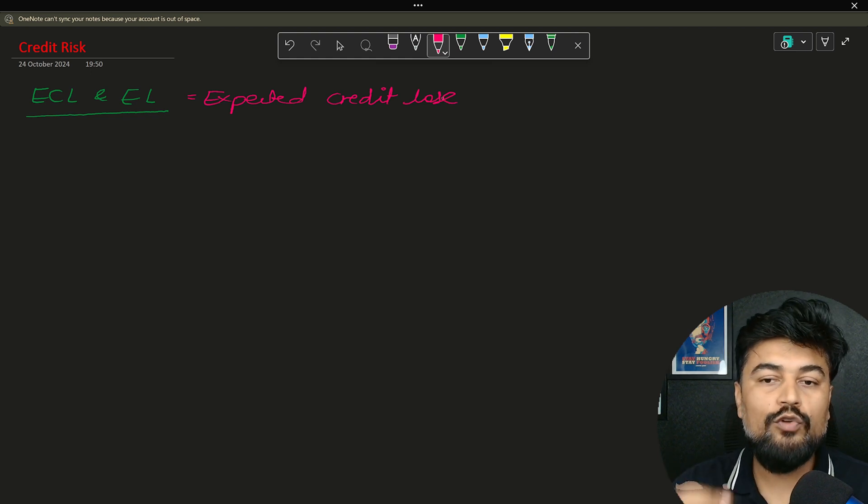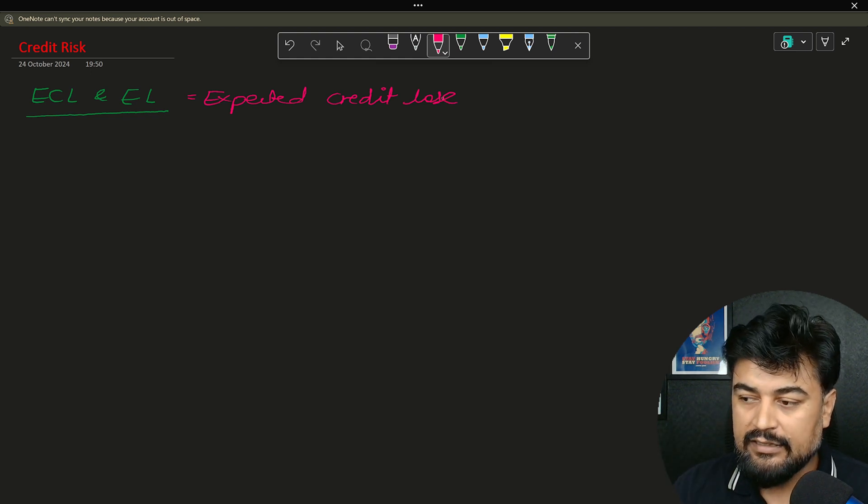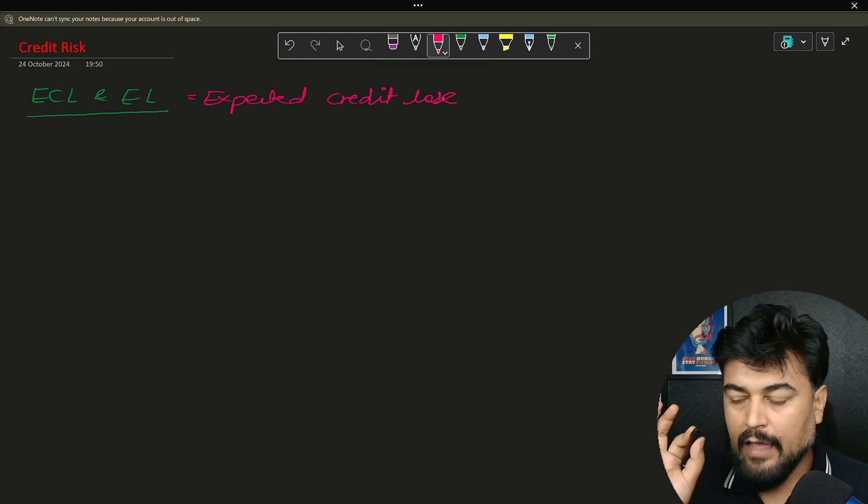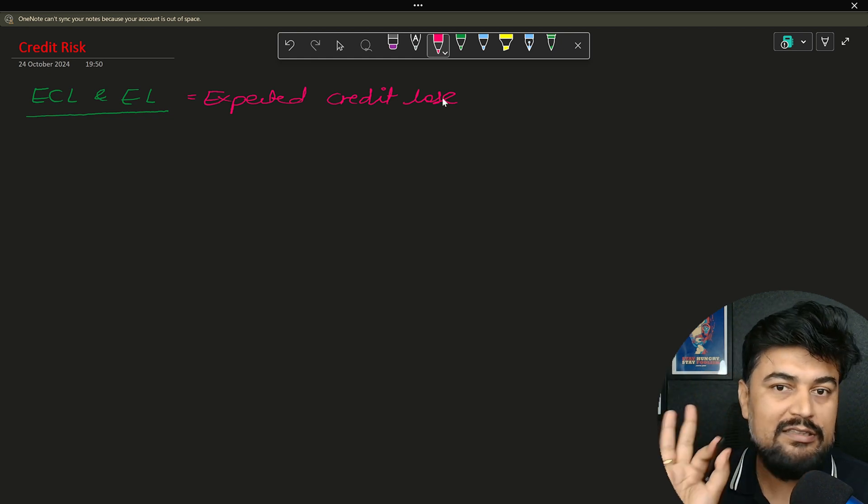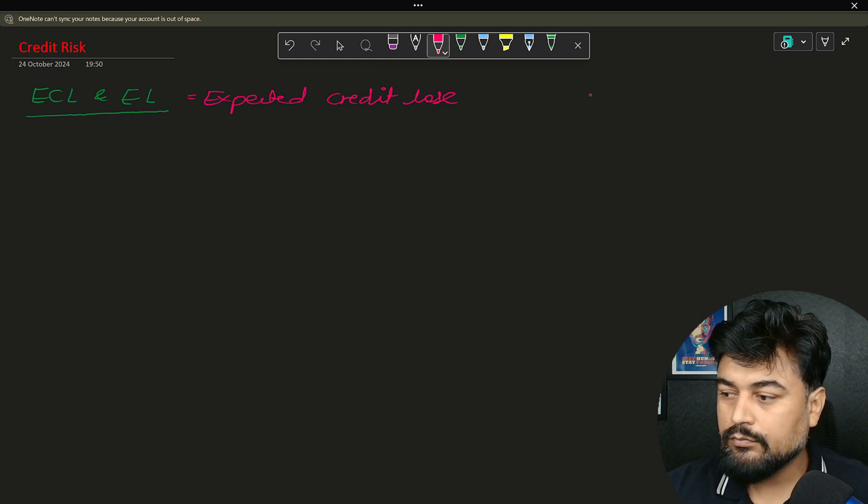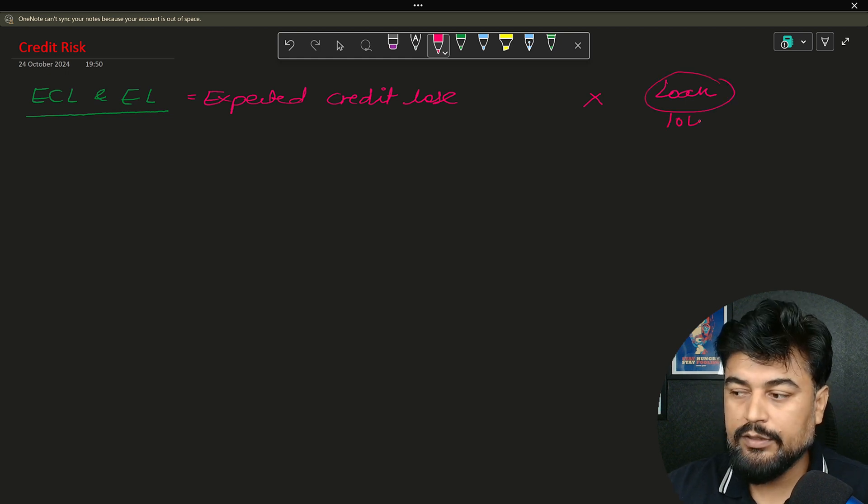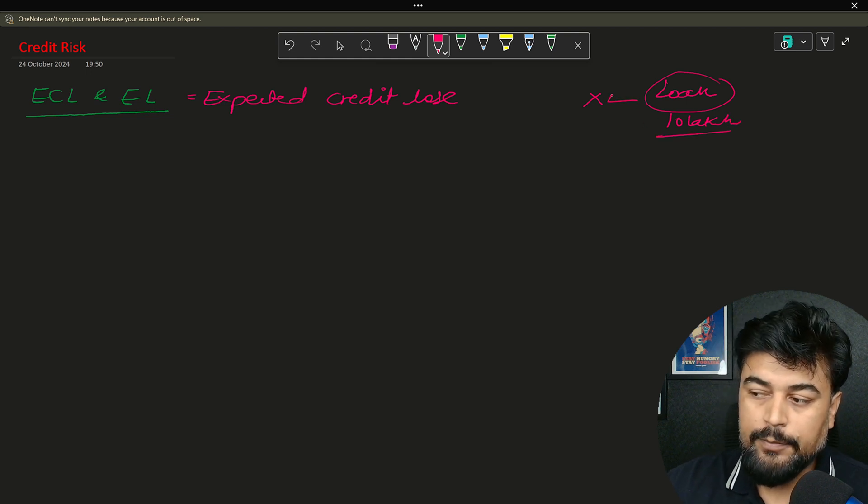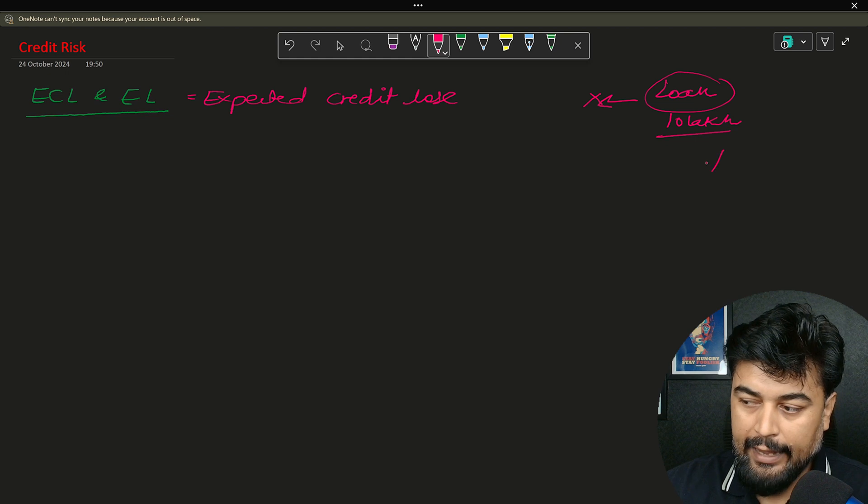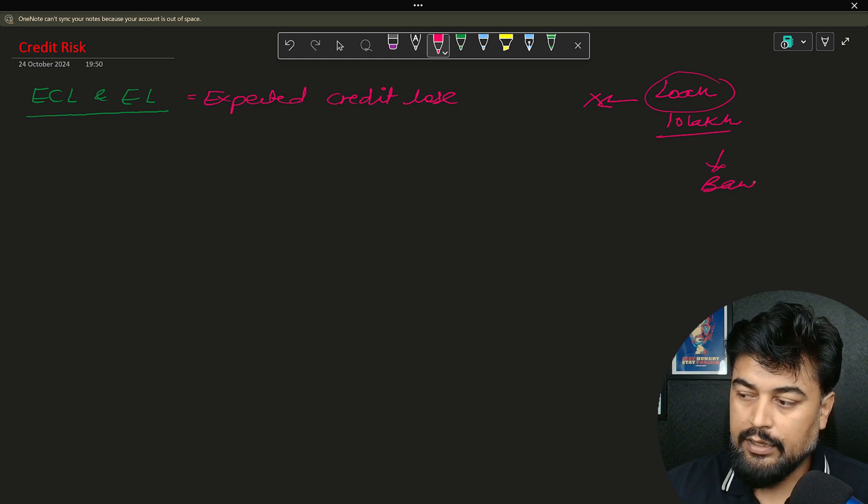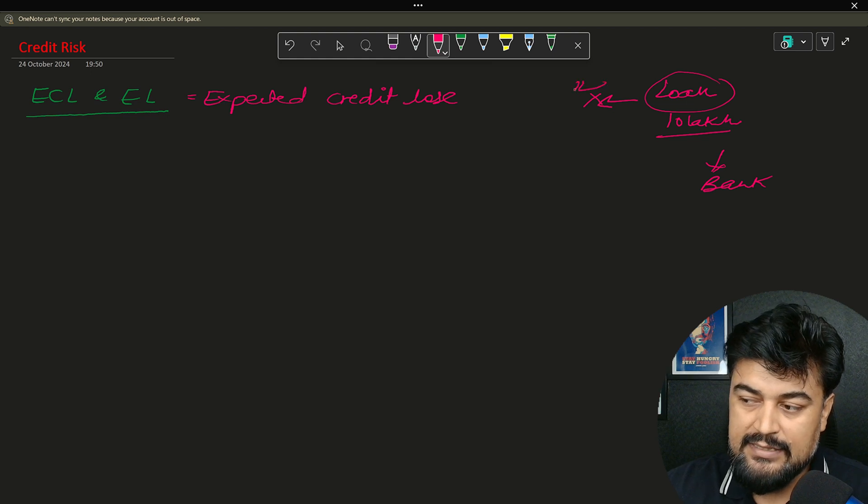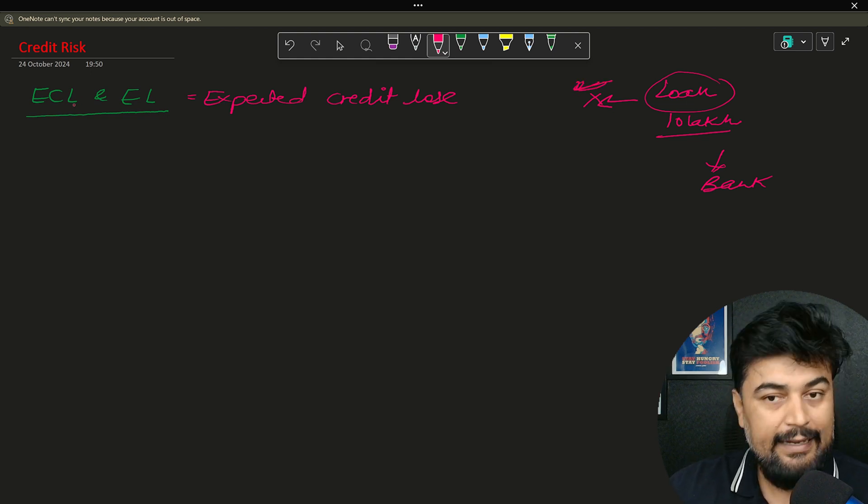That is the amount which bank is already expecting that will be lost after a loan or any particular product is being defaulted. Let's say there is a person named X. He took a loan, let's say 10 lakh rupees. So what is the total expected loss that will happen to the bank if Mr. X is defaulting? That is known as expected loss.